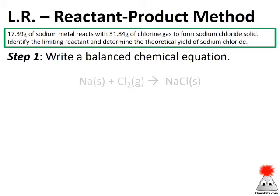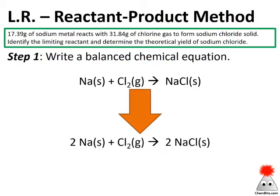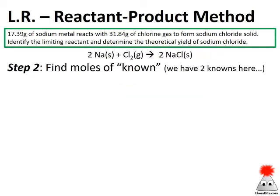Step one: write a balanced chemical equation. We've got sodium and chlorine — remember chlorine is one of those diatomics — reacting to form sodium chloride. This isn't balanced yet; in order to balance it we're going to need a couple of twos because chlorine is a diatomic gas. So there's our balanced chemical equation: 2Na + Cl₂ → 2NaCl. Step one complete.